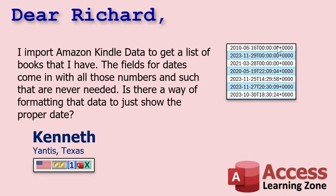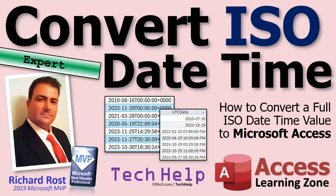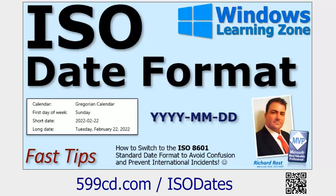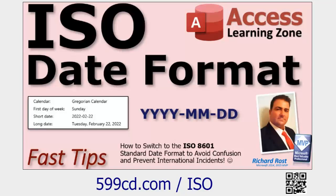In order to convert this into a date time that Access can work with, we're going to use some different functions. Let's talk about the prerequisites for today's video. Since Kenneth is an expert student, we're going to keep this at the expert level, which means there's no VBA required. If you're not familiar with ISO dates, I'm on a mission to convert the whole world to the ISO date format — year, month, day. Watch this video to learn more about ISO dates specifically in Access.